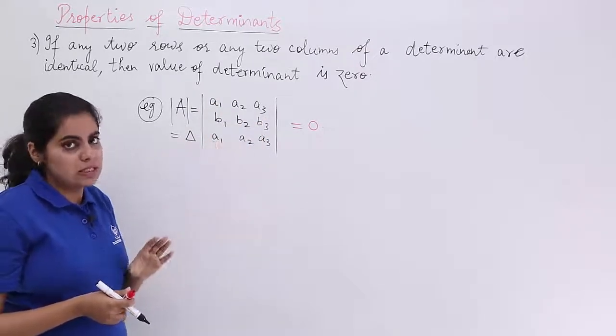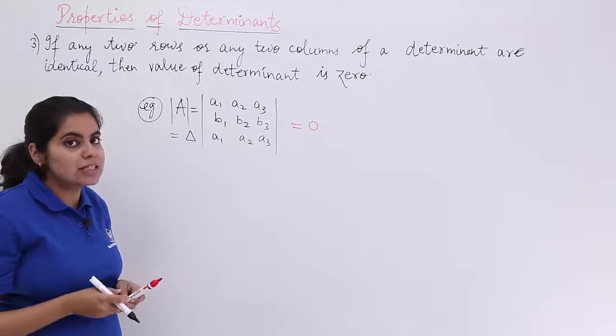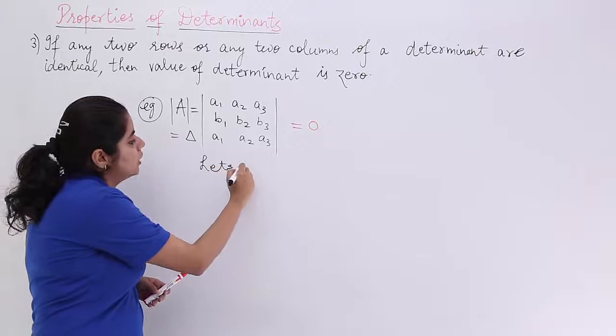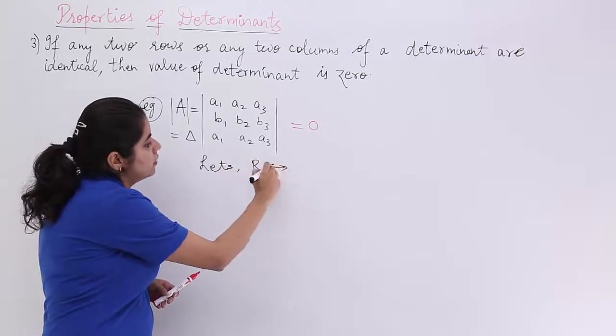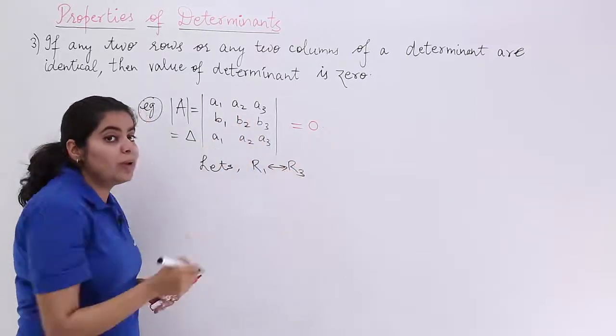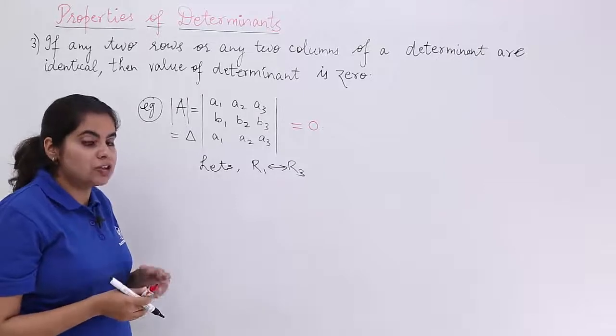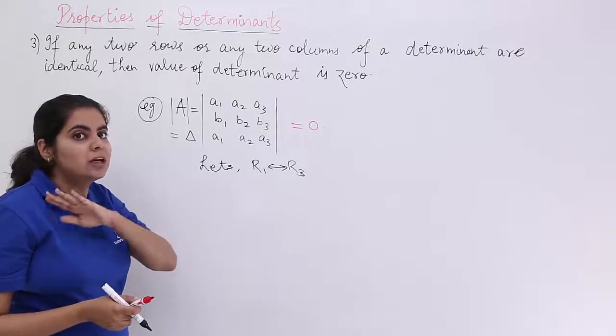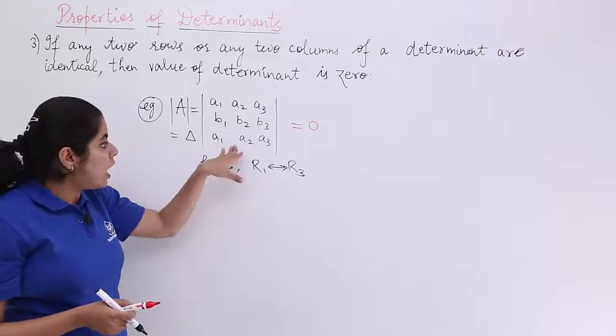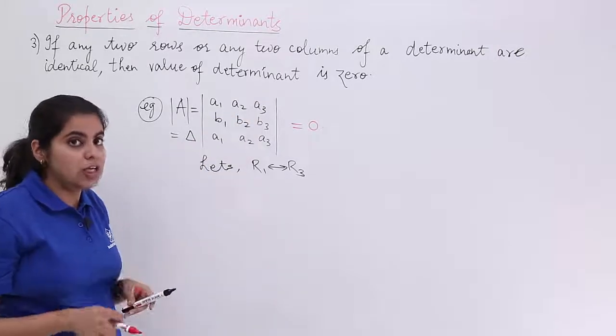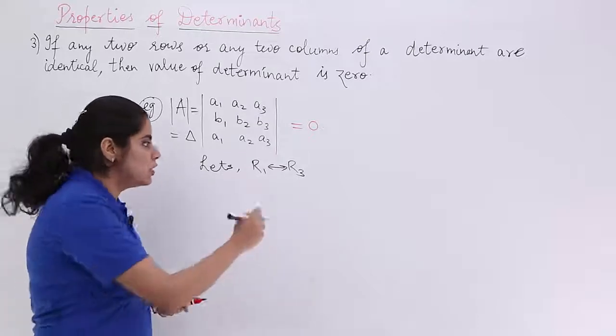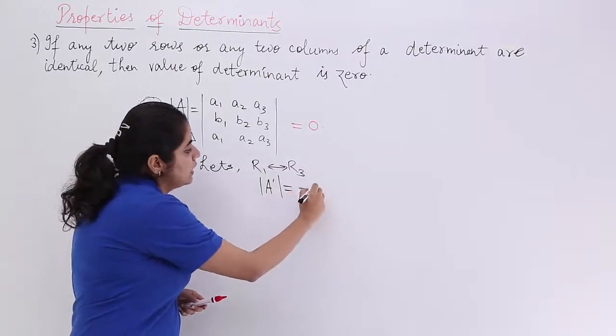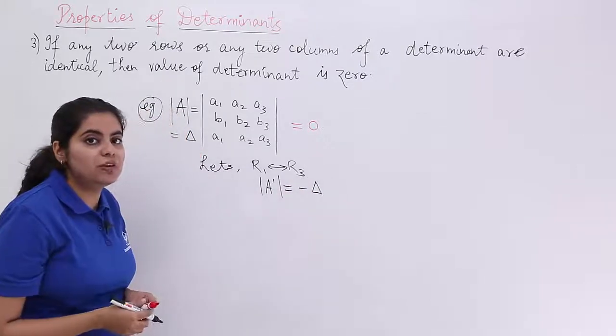To prove this property number 3, I say that let us interchange something. Let's interchange r1 and r3. If you interchanged r1 and r3, then by the previous property, you know that the sign of the determinant will change. If r3 and r1 are interchanged, I say that my sign changes. So now, the determinant value is basically nothing but minus del that you will be getting.